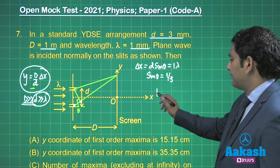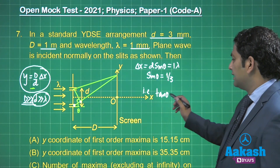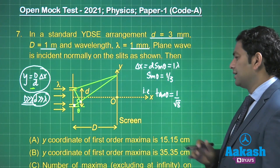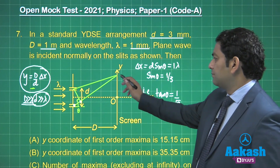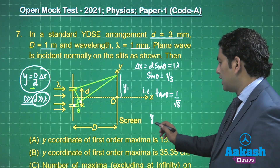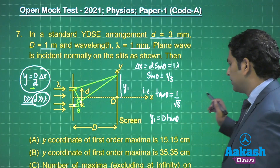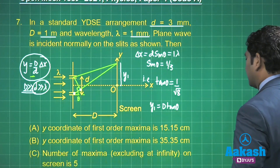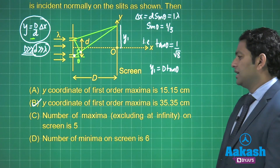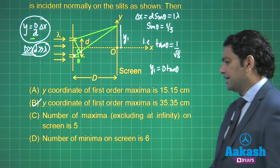Since sine theta is one by three, tan theta works out to be one by root 8. The position of the first maxima y₁ equals D tan theta. Solving this gives option number b as correct.